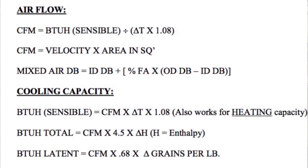At the very top, the airflow equation is: CFM equals BTU sensible divided by delta T times 1.08. Down at cooling capacity, the sensible cooling formula — with cooling you have a negative delta T and with heating a positive delta T going from return to supply. Look at BTU sensible: it's CFM times delta T times 1.08. It's pretty simple if you're working on something that doesn't produce any latent change.